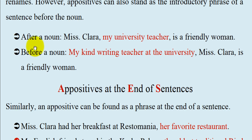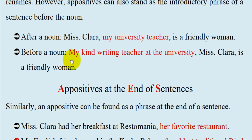After a noun: 'Miss Clara, my university teacher, is a friendly woman.' Before a noun: 'My kind writing teacher at the university, Miss Clara, is a friendly woman.' Notice the comma placement when the appositive appears before the noun.